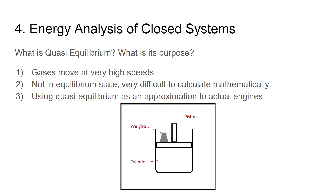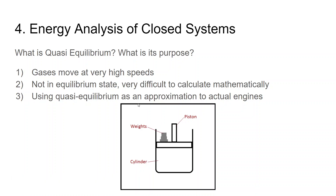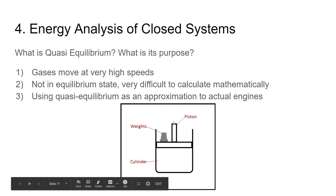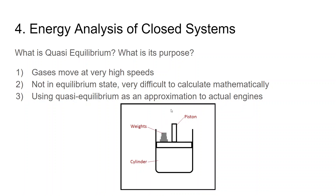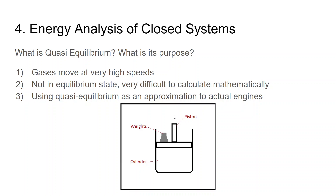Quasi-equilibrium is essentially a slow process. Imagine a cylinder with a piston and a large number of small weights on top. The pressure inside times the piston area creates a force, balanced by the weight above. At any given moment when the piston isn't moving, the system is in equilibrium. As you slowly remove one weight, the piston shifts up slightly, pressure balances again, then you remove another weight and the piston rises again. At every small step the forces are balancing — this is quasi-equilibrium, and we use it to approximate how actual engine cycles behave.